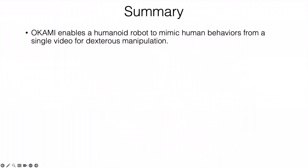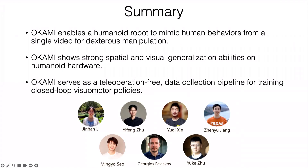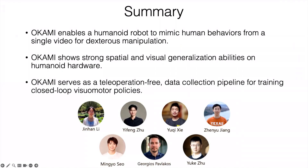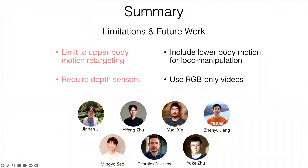In summary, we introduced Okami, which allows humanoid robots to imitate from a single video and shows strong visual and spatial generalization. Okami also serves as a teleoperation-free data collection pipeline for training closed-loop visuomotor policies. Current limitations include that it only supports upper-body retargeting and requires a depth sensor. Future work will include lower-body motion for locomotion-manipulation imitation and support for RGB-only videos.